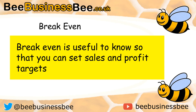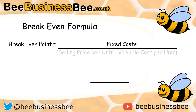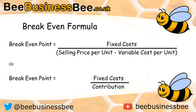Lastly, break-even is useful to know because you can set sales targets and potential profit targets — that's one of the advantages of break-even. Now let's drill down into more detail about the break-even formula. The break-even formula is typically expressed as fixed cost divided by the selling price per unit minus the variable cost per unit. Notice how the lower part is in brackets, meaning you calculate the bottom section first.